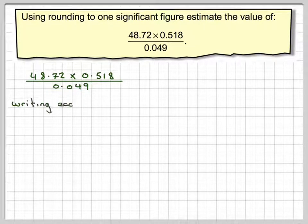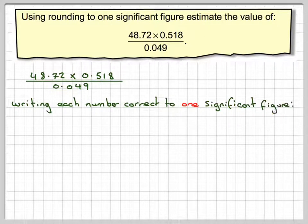So the first thing to do is to take each of these numbers and round them off correct to one significant figure. So we've got 48.72. So that's the first significant figure. This is the second. That 8 will make that 4 a 5, but we have to add in a 0 instead of the 8. So that's going to become 50 to 1 significant figure.